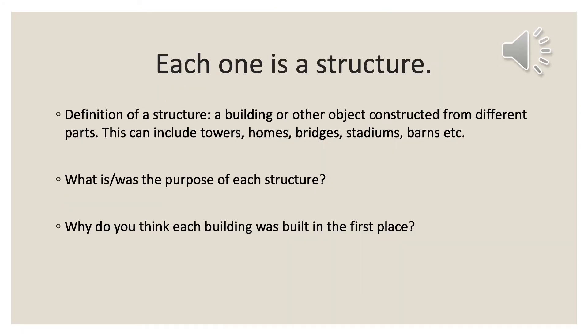The answer to the previous question about what each one has in common is that each one is a structure — quite famous structures too. When we're looking at a structure, the definition is: a building or other object constructed from different parts. This can include towers, homes, bridges, stadiums, barns — the list is quite endless. The one that often surprises people the most is that bridges are a structure, as they are made from different parts.